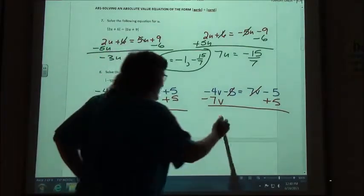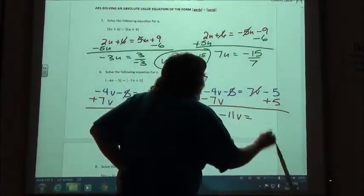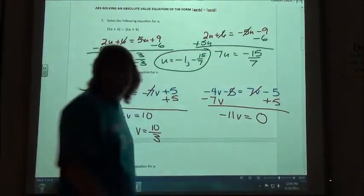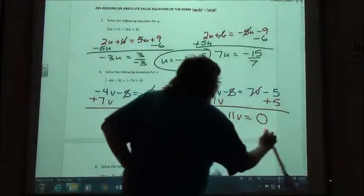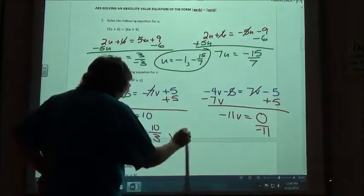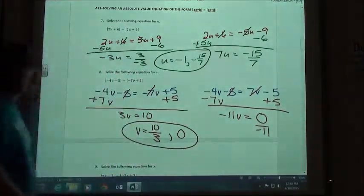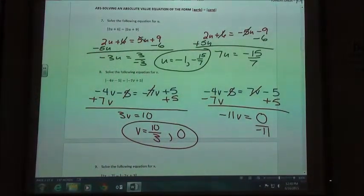Negative 11v equals 0, right? And 0 divided by negative 11 is still 0. So 10 thirds and 0 would be my two answers for that.